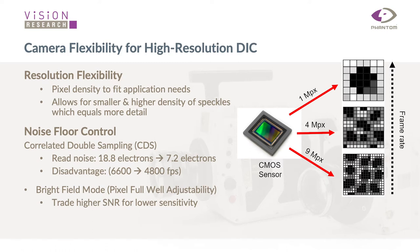We're also focused on giving you the best possible image in terms of noise floor. We offer correlated double sampling, which you can toggle on and off. Toggling it on gives you 7.2 electrons for read noise, whereas turning it off gives you around 20 electrons read noise — essentially a trade-off between image quality and speed. We also have bright field mode, which allows you to adjust the full-well capacity of the pixels.